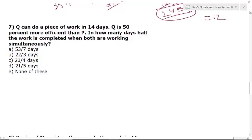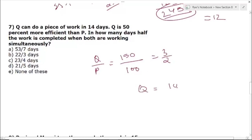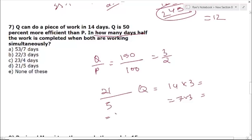Question 7: Q can do a piece of work in 14 days. Q is 50% more efficient than P. So ratio Q:P = 150:100 = 3:2. Total work = 14 × 3 = 42. Half the work = 21. When both work simultaneously, combined efficiency = 3 + 2 = 5. Days to complete half the work = 21 ÷ 5 = 4 and 1/5 days. The answer is approximately 4 days.